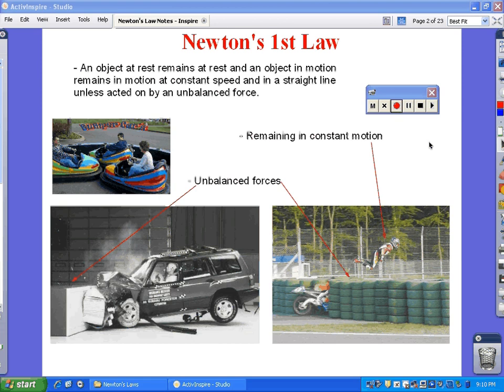Additionally, an object moving at constant speed will continue to do so unless acted on by a force. The motorcycle was going and going, and then all of a sudden it hits the tires, which were the unbalanced force. It's a lot of friction that hits and opposes the motion of the motorcycle. As a result of that opposing motion, the force is unbalanced and the motorcycle goes flying through the air.